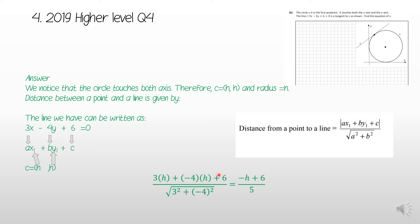Substituting in: the numerator is 3h + (−4)h + 6, and the denominator is √(3² + (−4)²). Simplifying: the denominator gives √(9 + 16) = √25 = 5, and the numerator gives −h + 6. So the distance equals (−h + 6) / 5.